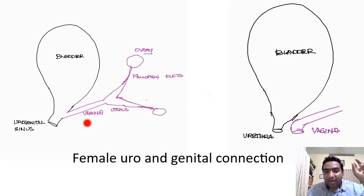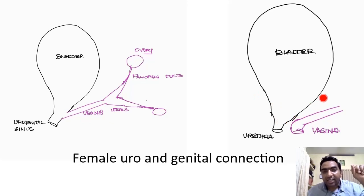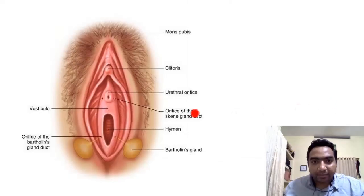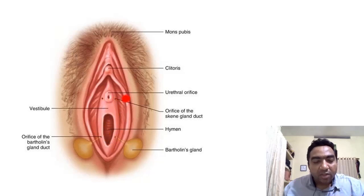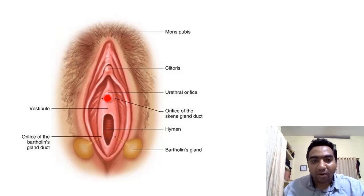In the adult, this joining point reaches outside upon completion of development, so the urethra and vagina will have separate openings in the introitus. We have the clitoris here, then the urethral orifice anteriorly, and the vaginal orifice posteriorly. So when performing Foley's catheterization, always remember this anatomy — don't put it into the larger, easier hole; always put it into the smaller hole.